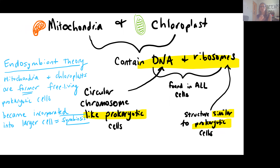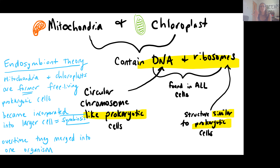In a symbiotic relationship, both organisms are benefiting. In this case, the former free-living mitochondria benefit by living inside another cell. Over time, they merged into a single organism such that the mitochondria and chloroplasts are no longer able to live independently — now they are full organelles, but they have retained their prokaryotic-style DNA and prokaryotic-style ribosomes, functioning as organelles inside eukaryotic cells.